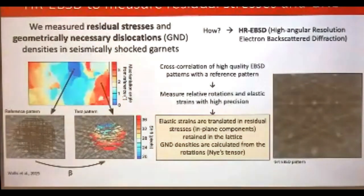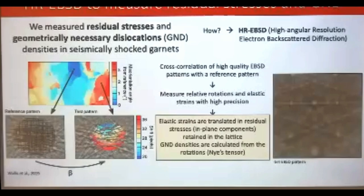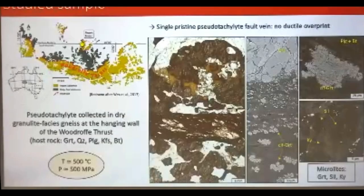To measure the distortion in the garnet lattice, we use high-angular resolution electron backscatter diffraction (HR-EBSD). I did the analysis here last year — that's why you saw me in Oslo last year. Briefly, we acquire an EBSD map with high-resolution patterns, store the patterns, and then cross-correlate portions of each pattern to measure relative rotations and strains at the pixel scale. In this way we can quantify relative rotation and elastic strains of the mineral lattice, obtain residual stresses from the elastic strains, and dislocation densities from the rotations.